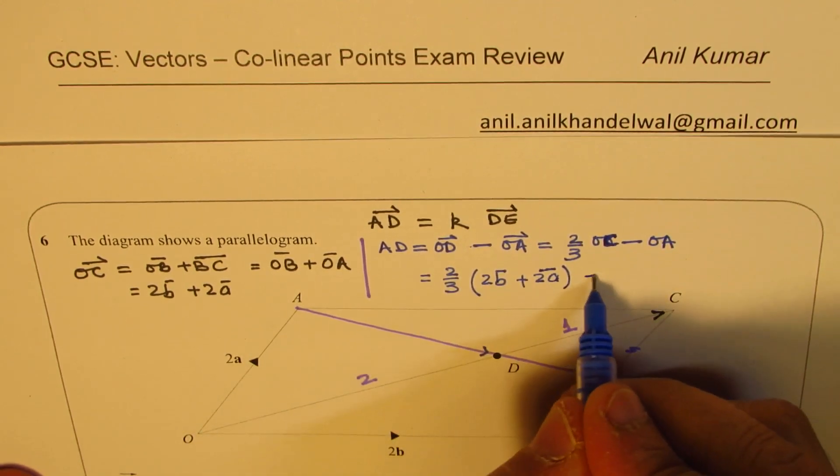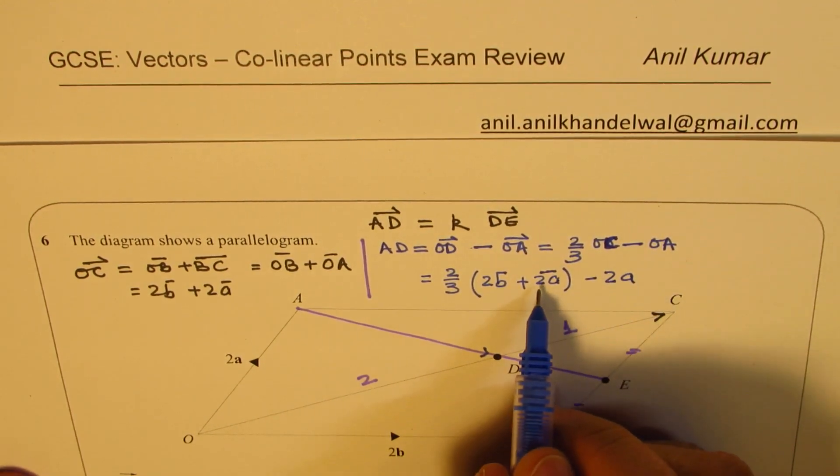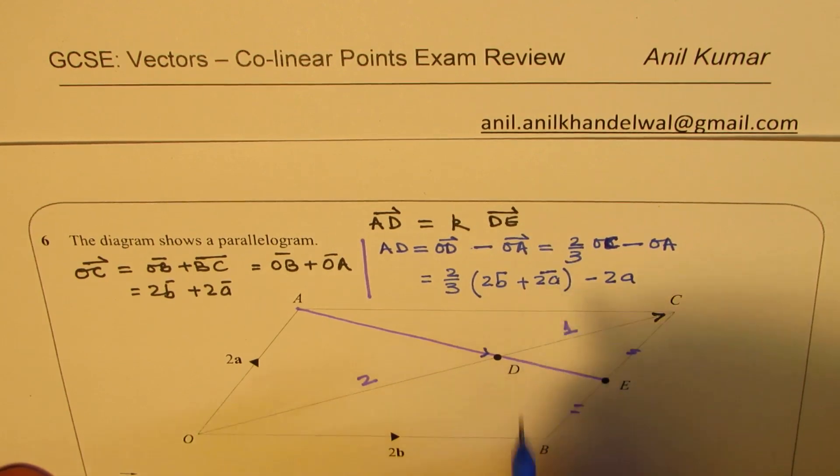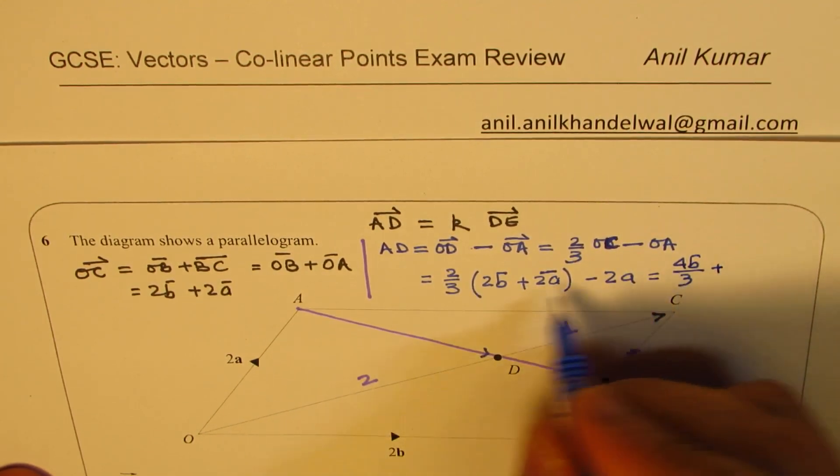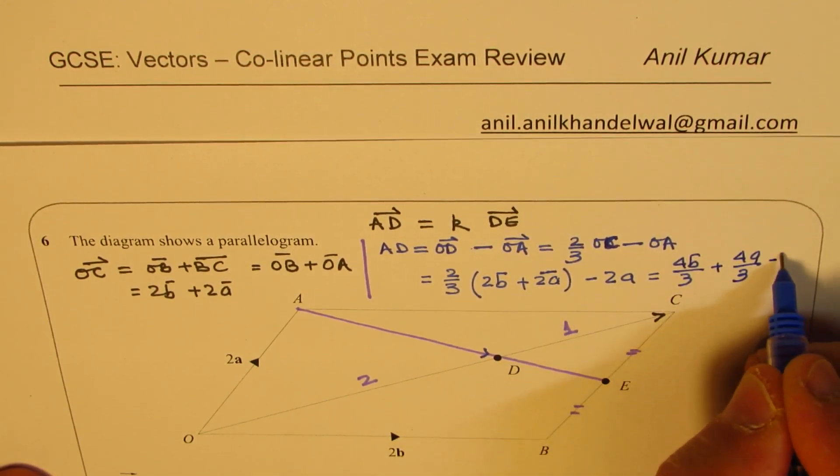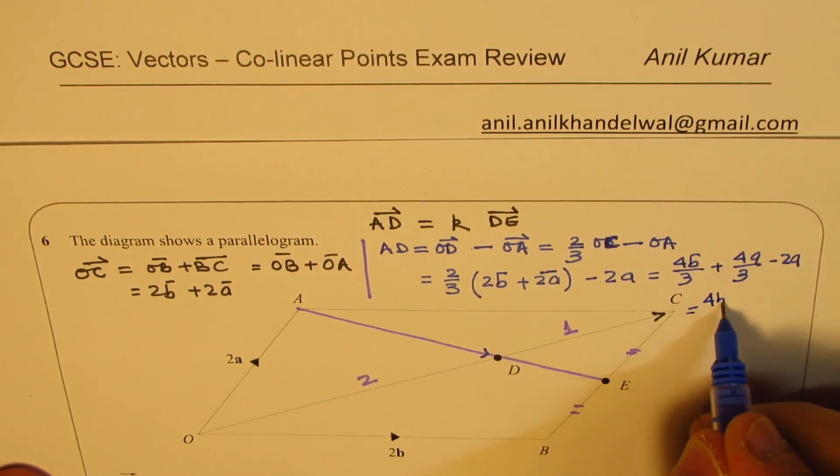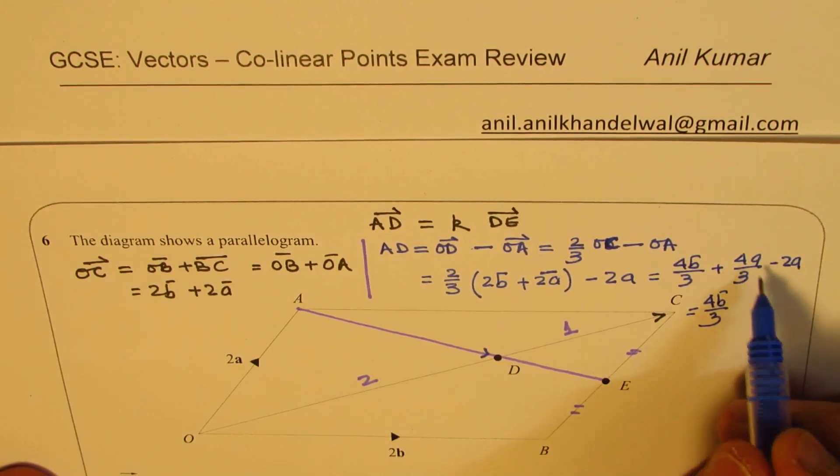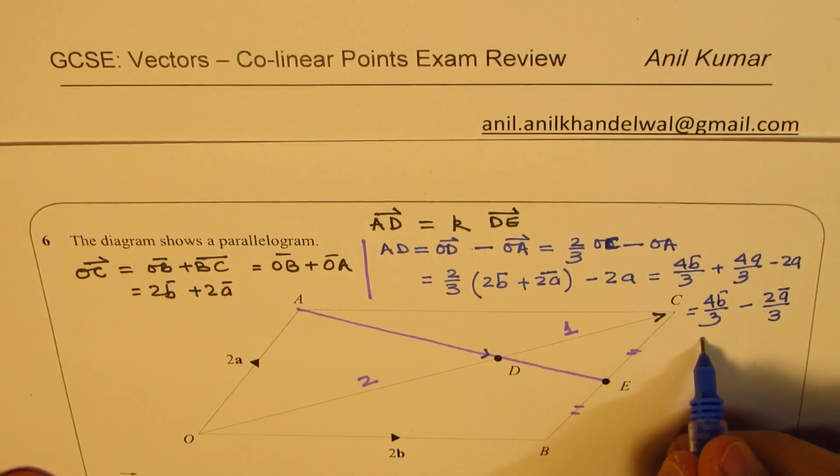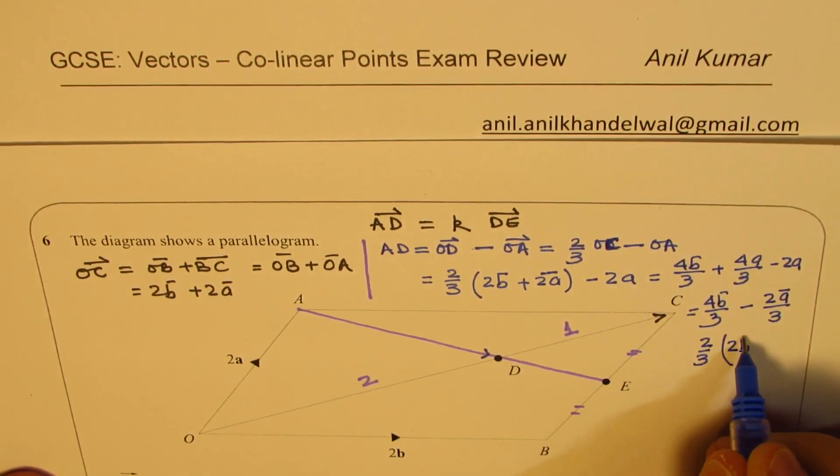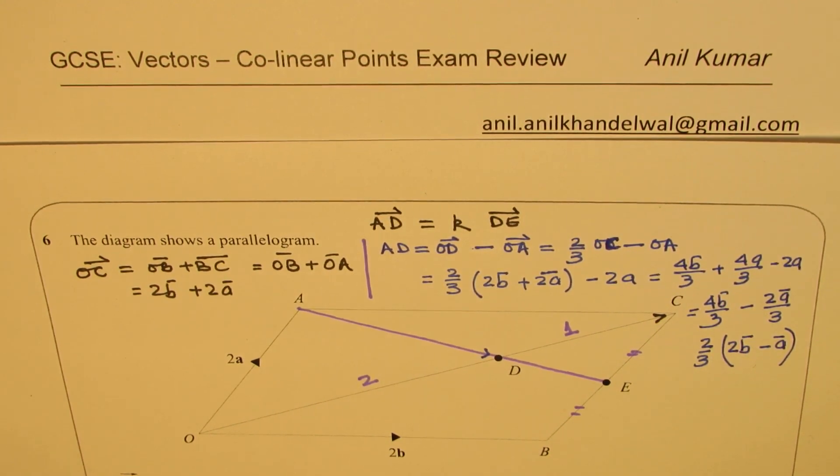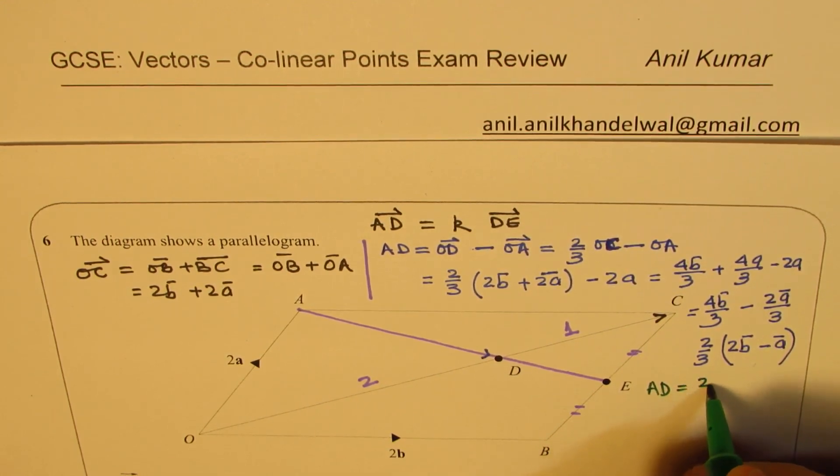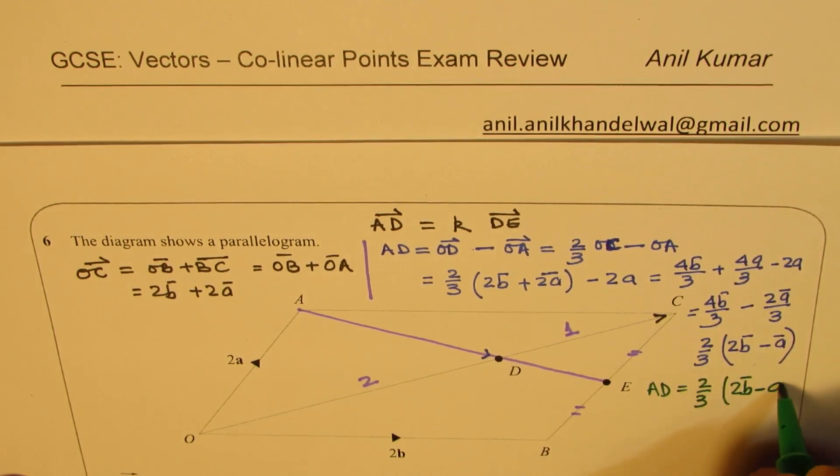2/3 times 2B plus 2A. So we get 4B/3 plus 4A/3 and then minus 2A. So that gives you 4B/3 and minus 6/3 which gives you minus 2A/3. So we can take 2/3 common. We get here 2B minus A. So that becomes our vector AD. So let me write it clearly. We found that AD is 2/3 of 2B minus A.